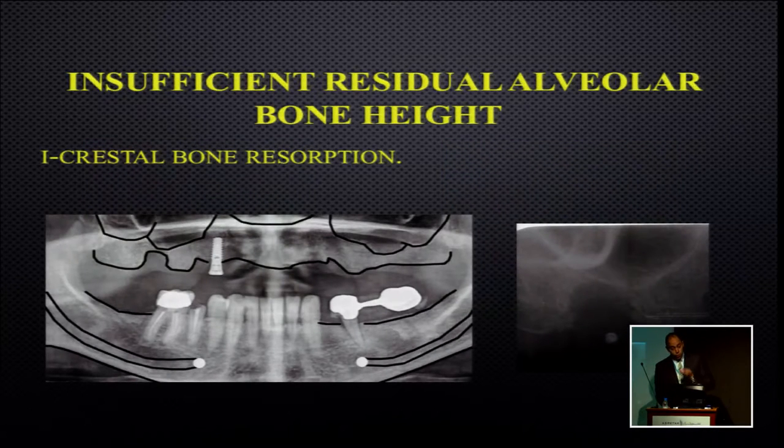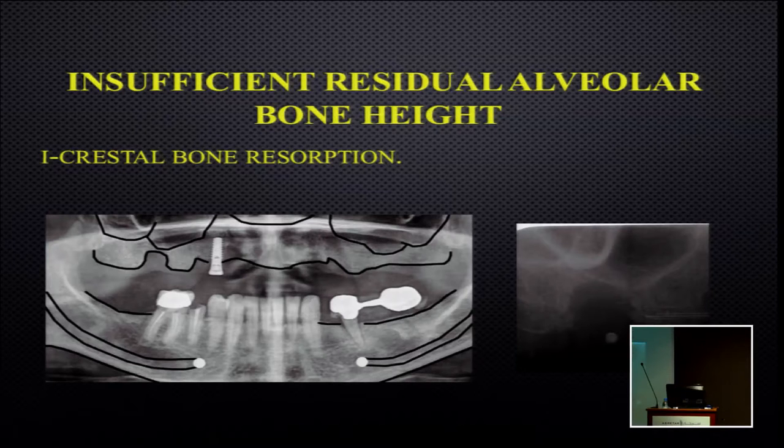When we have insufficient bone height, crestal resorption is our main problem — for example, crestal resorption from an old lost implant. We manage this the same way: block graft, or particulate graft with titanium mesh or titanium-reinforced membrane. For a full arch case, we use block grafts with the implants themselves to fix those blocks, place many implants for a temporary restoration, and fill gaps between blocks with particulate bone graft covered with titanium-reinforced collagen membranes to maintain the shape of bone around the blocks.